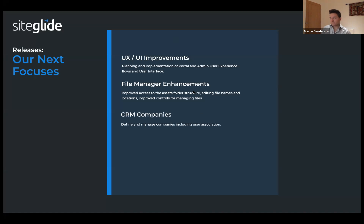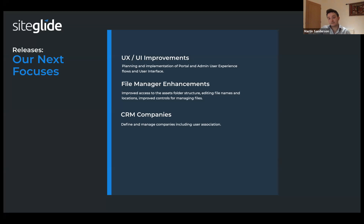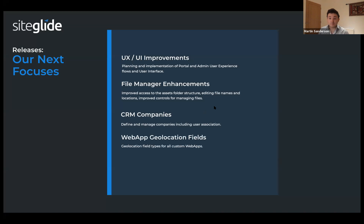Next is CRM companies — being able to create a company and group users by that company, which is really handy for online portal sites. If somebody in one company makes a new post or product, someone else in their company can edit and manage it. We also have web app geolocation fields — similar to how we've seen on the events module, we're bringing geolocation functionality to web apps as well.